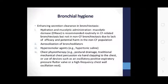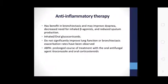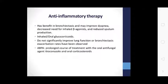Mucolytics are not recommended routinely for non-CF bronchiectasis due to lack of efficacy and potential harm. Aerosolization and bronchial dilators include hypertonic saline. Chest physiotherapy includes postural drainage, mechanical chest vibration, and devices such as oscillatory positive expiratory pressure, flutter valve, and high-frequency chest wall oscillation. Anti-inflammatory therapy may provide benefit in bronchiectasis, including decreased need for inhaled beta-agonists and reduced sputum production; however, inhaled and oral glucocorticoids do not significantly improve lung function. Bronchiectasis with ABPA may benefit from a prolonged course of oral antifungal agents such as itraconazole and oral corticosteroids.